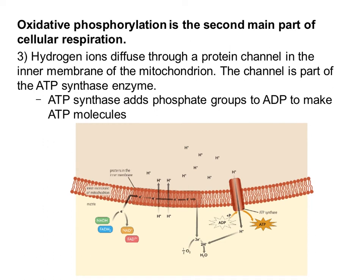Step three: hydrogen ions are going to diffuse through a protein channel that is part of ATP synthase, just like we saw in photosynthesis. ATP synthase is going to phosphorylate ADP and make ATP.